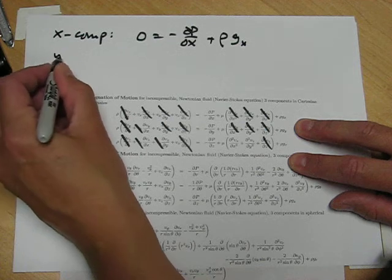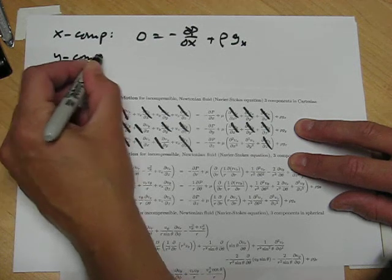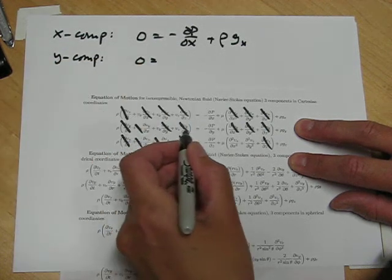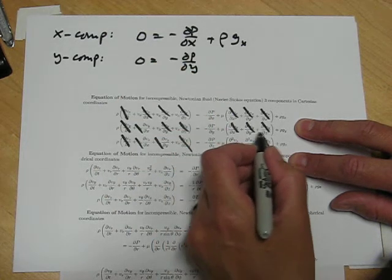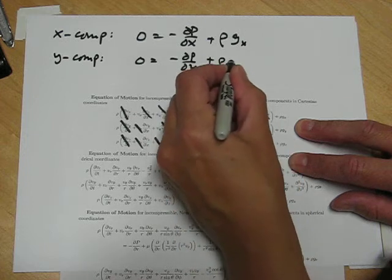y component, zero equals, nothing on the left, minus dp dy plus mu times zero plus rho gy.